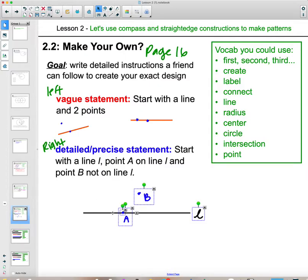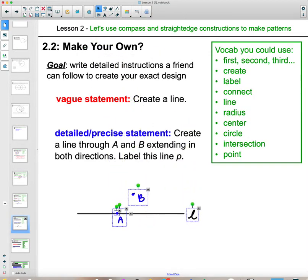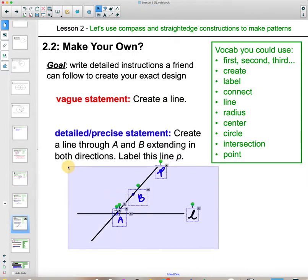The next statement says, create a line. Vague. Just create a line. Detailed: create a line through A, B. Now it wants you to do a line through A, B. Remember, a line is an extension. Lay your straight edge on there and draw a line that goes through A and B, so it touches them. Label this line P.